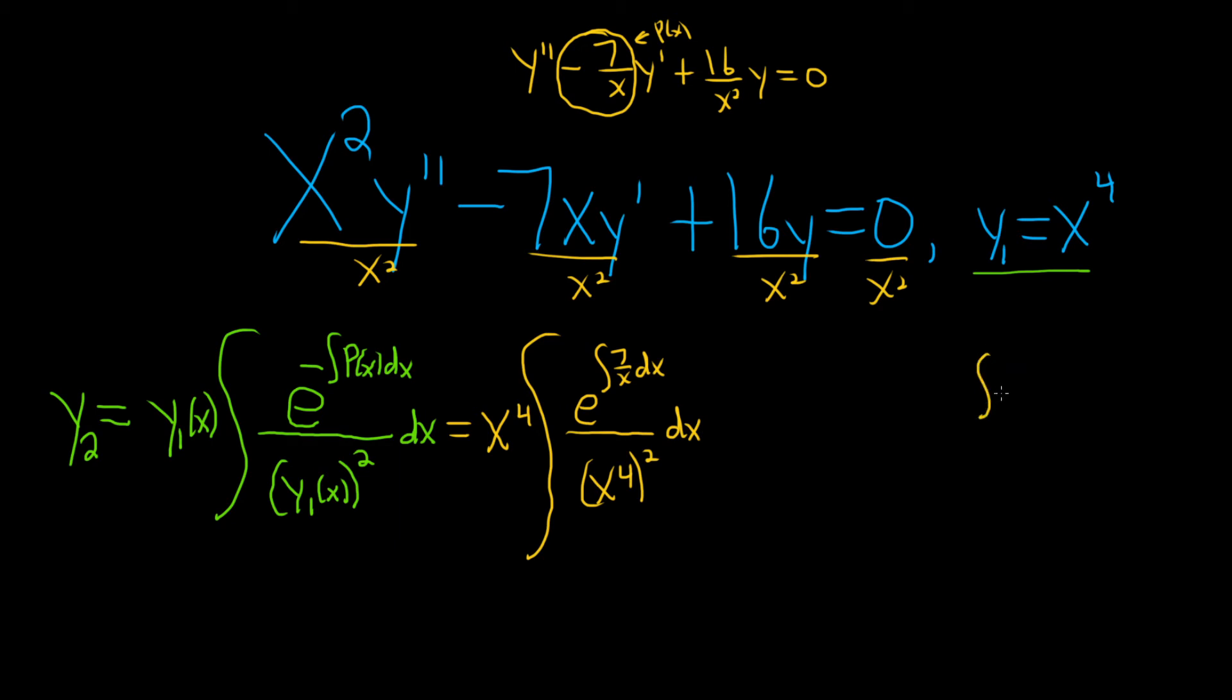All right, e to the integral of 7 over x dx. That's the same thing as e to the 7 ln x with absolute value. Don't worry about the C. That's the same thing as e to the ln x to the seventh, which is the same thing as the absolute value of x to the seventh, which we can pretend is x to the seventh if x is positive. So this type of calculation was done a lot when we studied linear differential equations. So it's very routine, but you integrate 7 over x, you get this, you bring this upstairs, e and ln cancel, you end up with an absolute value, pretend it's positive, so you just get x to the seventh.